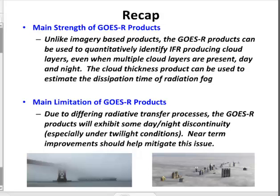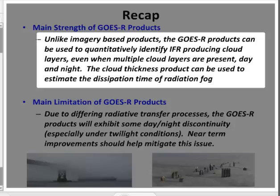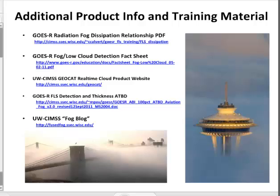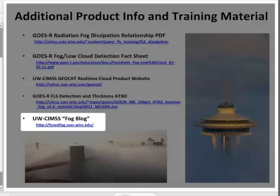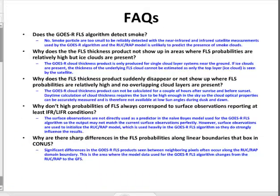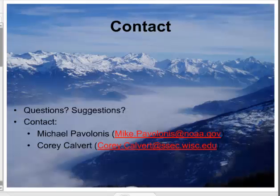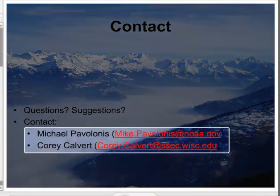The main strength of the GOES-R Fog and Low Stratus IFR probability product is that it can be used to quantitatively identify IFR-producing cloud layers, even when multiple cloud layers are present, day and night. This slide shows additional product information and training material. The FOG blog is updated about twice weekly, subject to the presence of fog, and is a good source of extra and up-to-date case studies. This slide shows frequently asked questions and answers. Do you have questions or suggestions? Use the email addresses on this slide.